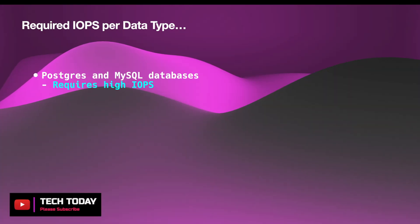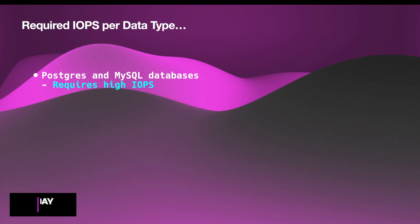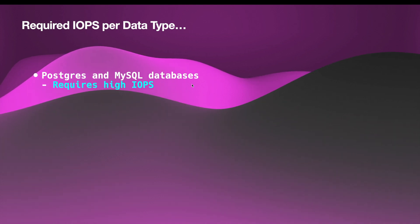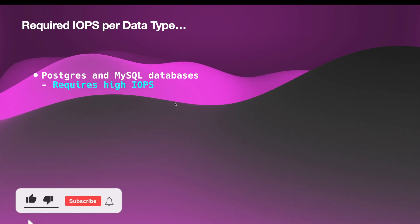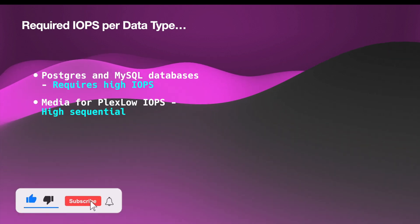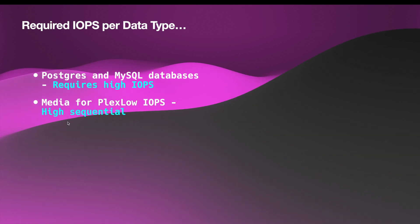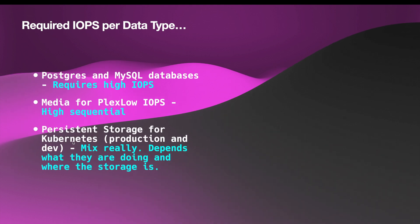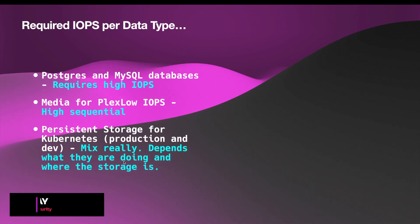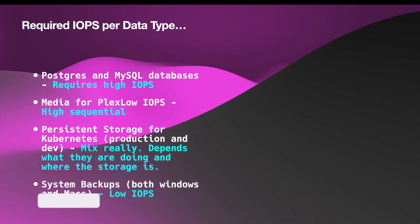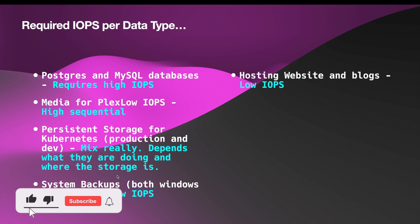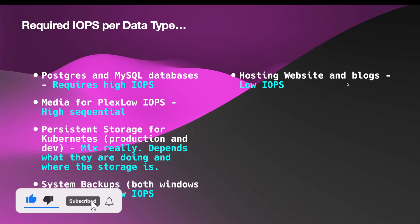Next we need to look at the IOPS requirements for these data types. For Postgres and MySQL databases, they require higher IOPS. For Plex Media Server, it needs low IOPS but requires higher sequential reads. For persistent storage for Kubernetes, it's mixed — it really depends on what they are doing and what type of data they're storing. System backups require low IOPS.